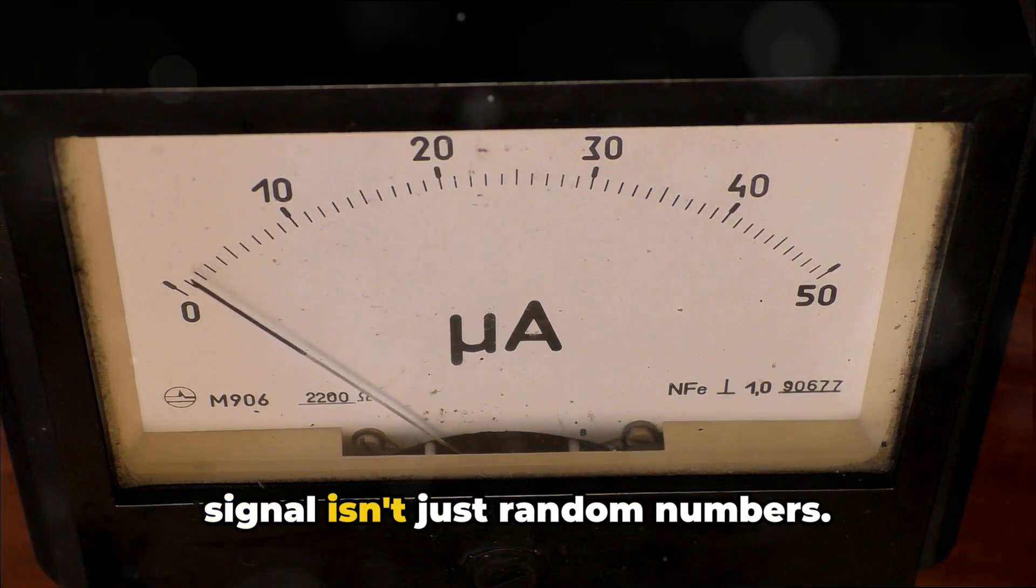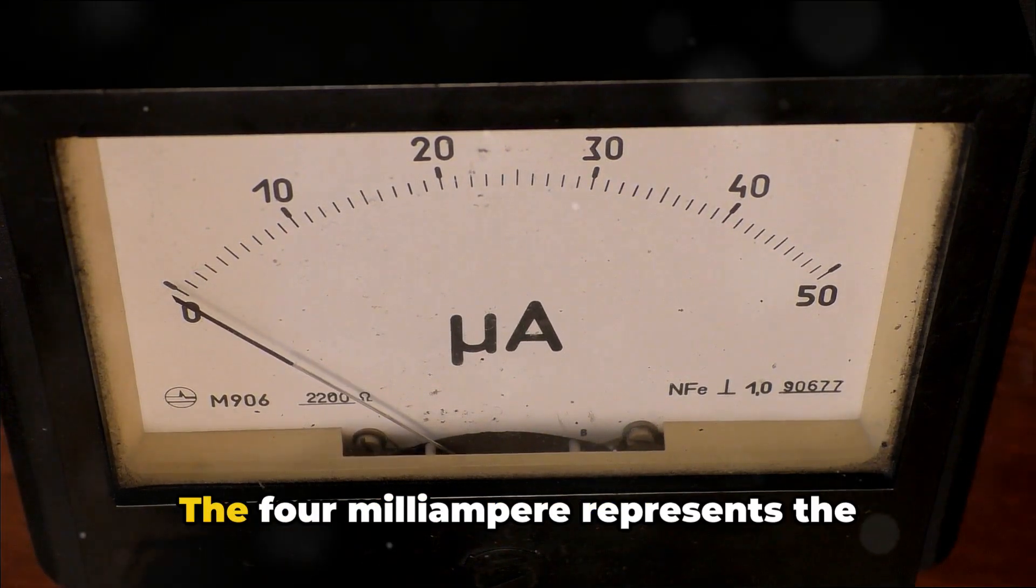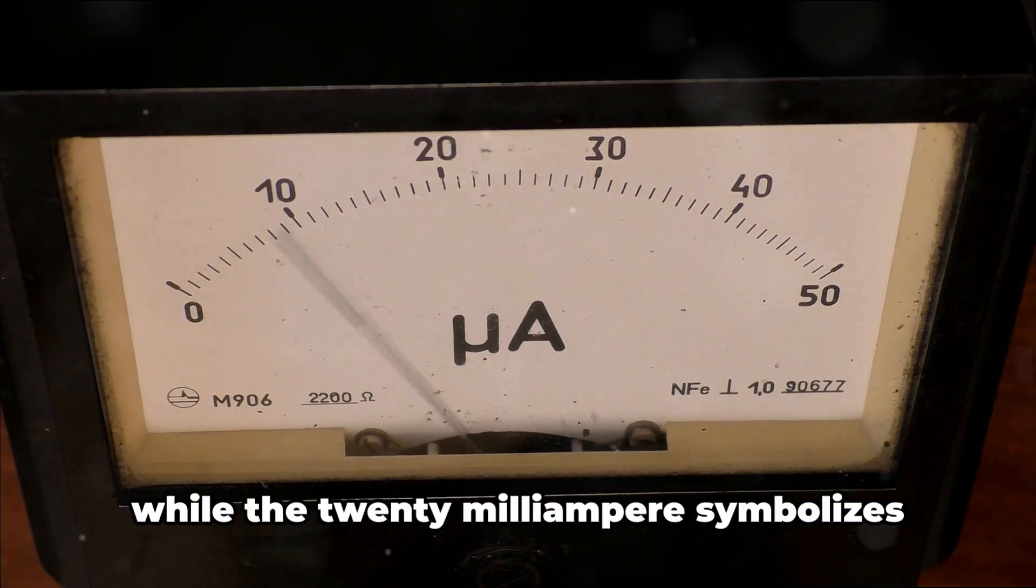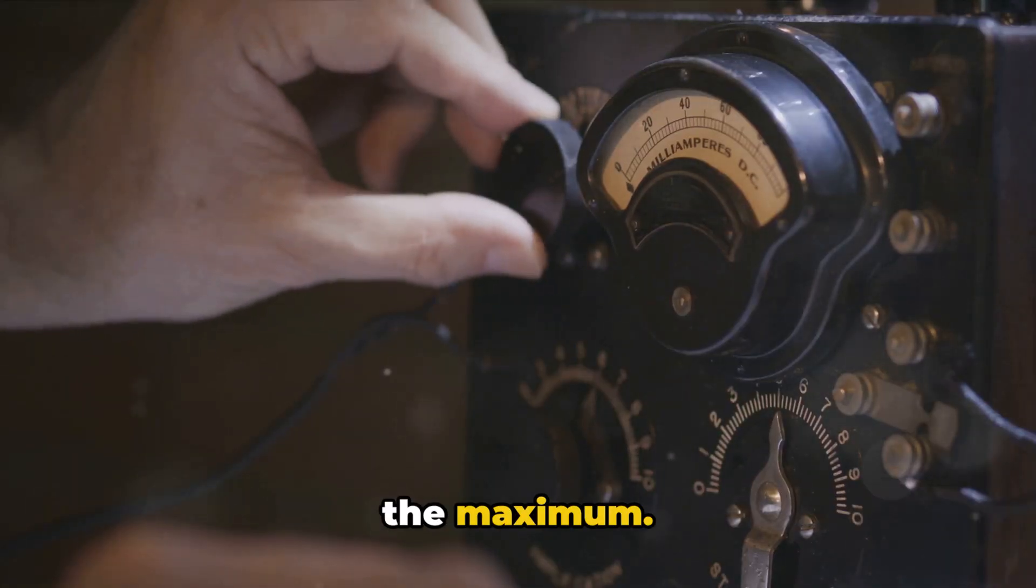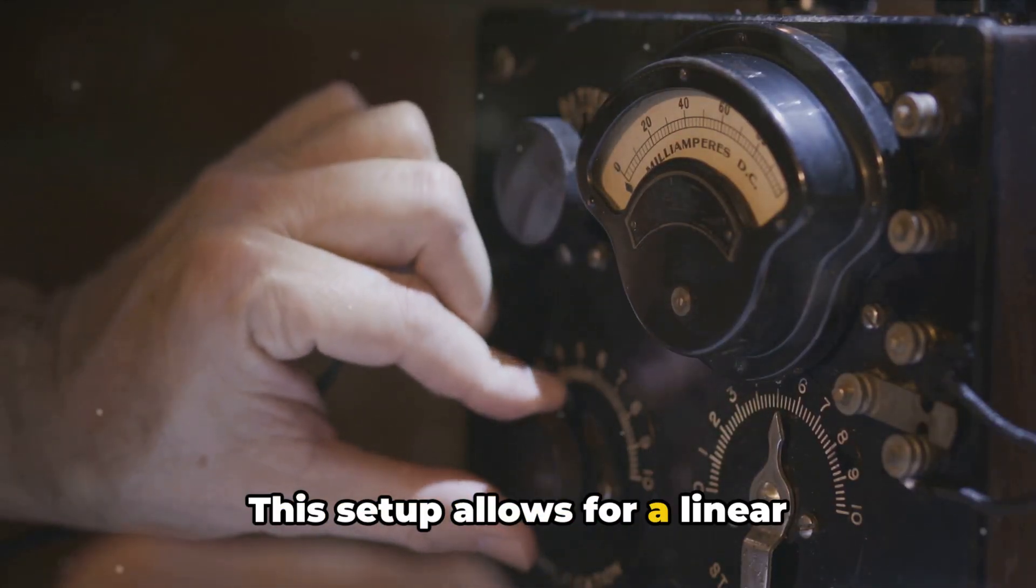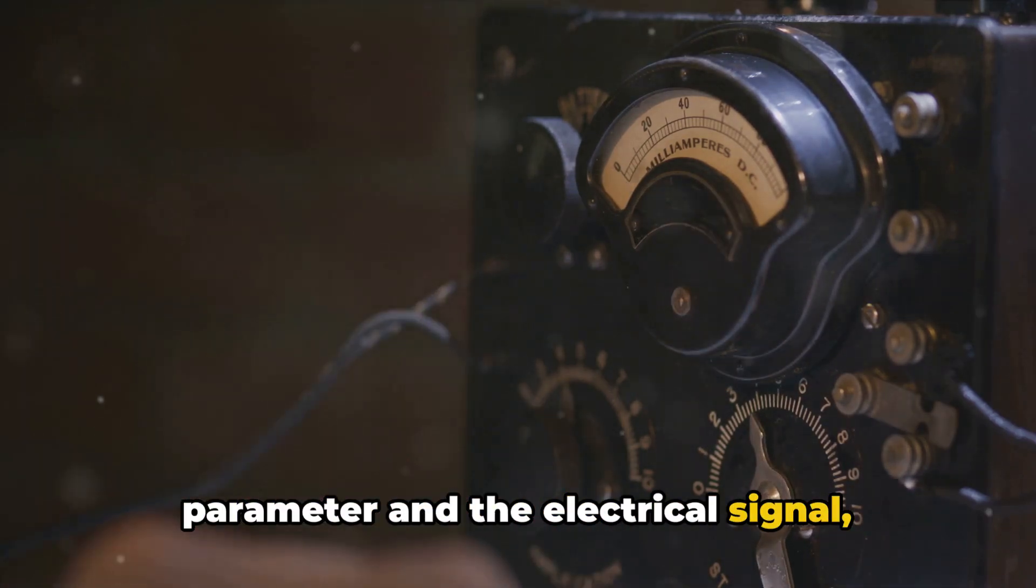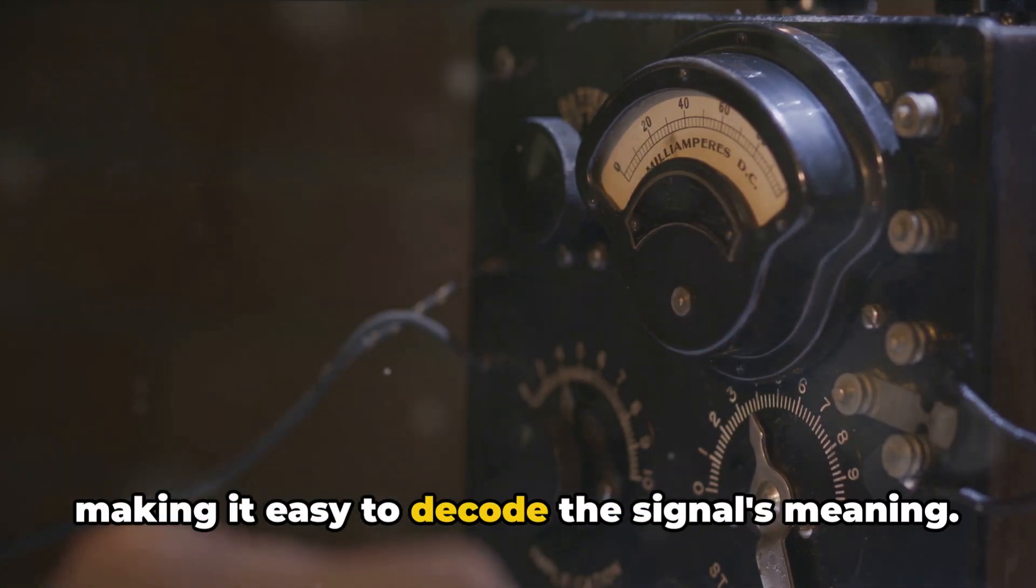The 4-20mA signal isn't just random numbers. The 4 milliampere represents the minimum value of the measured parameter, while the 20 milliampere symbolizes the maximum. This setup allows for a linear relationship between the measured parameter and the electrical signal, making it easy to decode the signal's meaning.